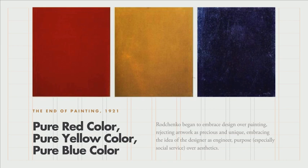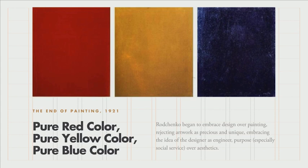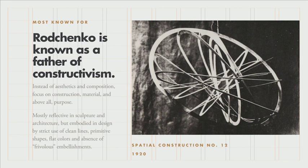So at this point he began to embrace design over painting. He rejected artwork as something precious and unique, and he embraced the idea of artists and designers as engineers over aesthetes — somebody that values aesthetics. He wanted artists and designers to basically contribute to the social good and purpose instead of being commenters on it. So his work is really kind of intertwined with politics. He's also known as a father of constructivism.